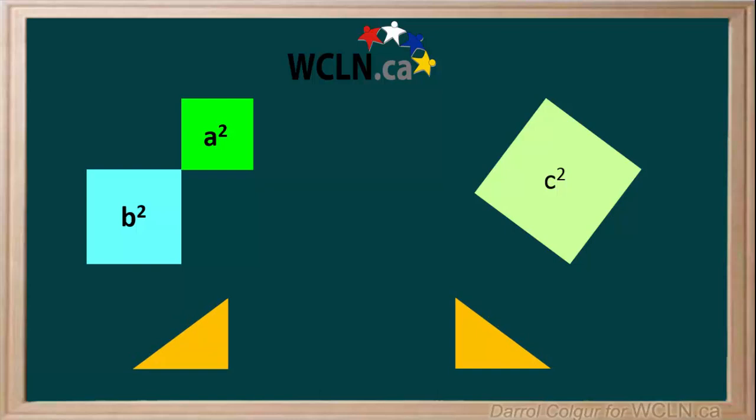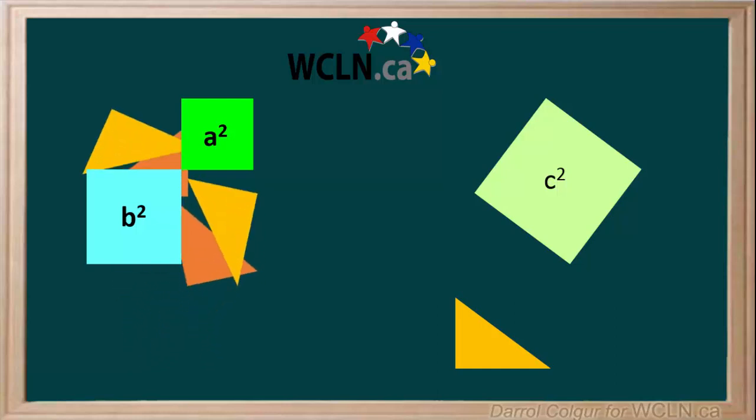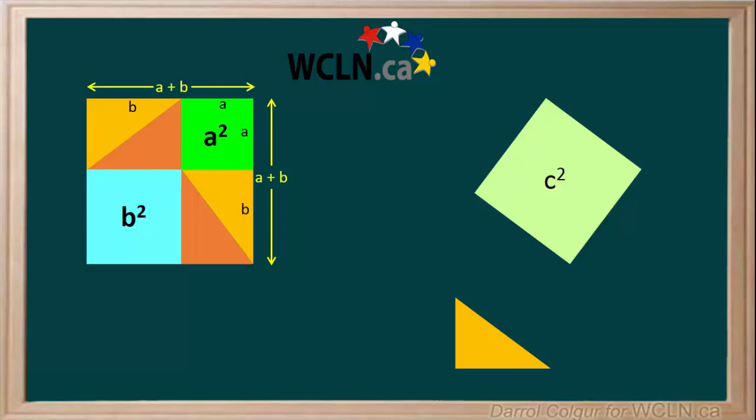Now, we'll arrange the four triangles on the left side, so that they make a square like this. Notice, the width of this square is A plus B, and the length is also A plus B, which means the area of this square is A plus B in brackets, squared.